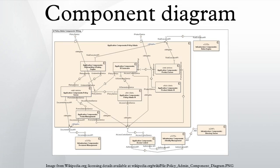A component is something required to execute a stereotype function. Examples of stereotypes in components include executables, documents, database tables, files, and library files.